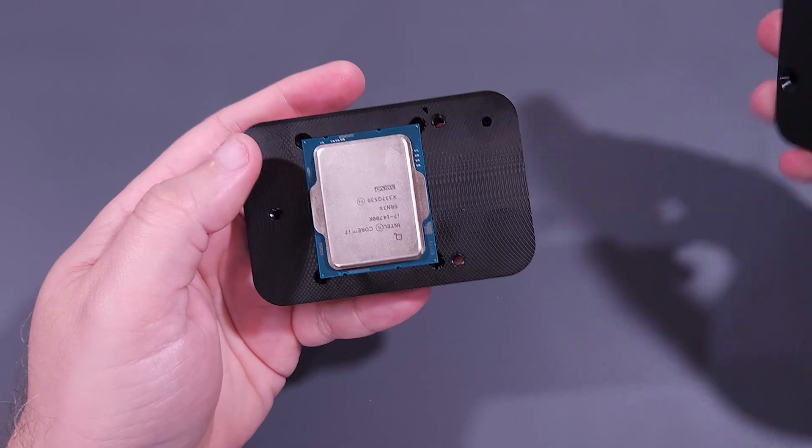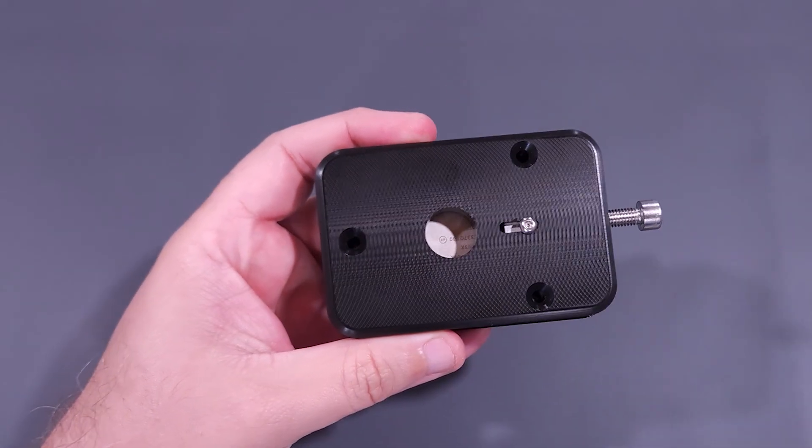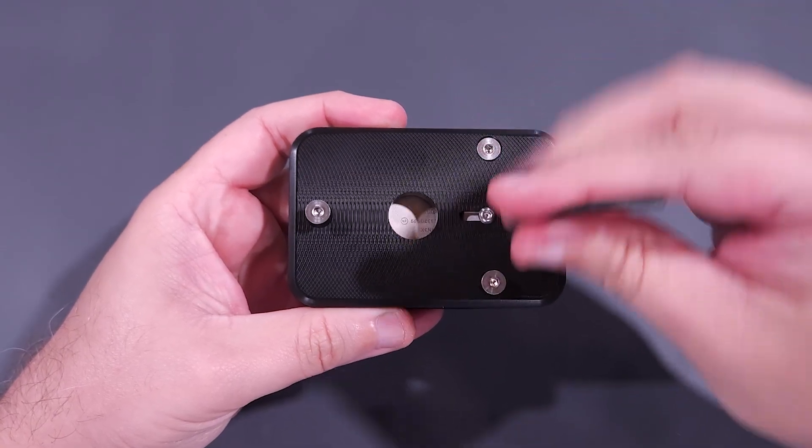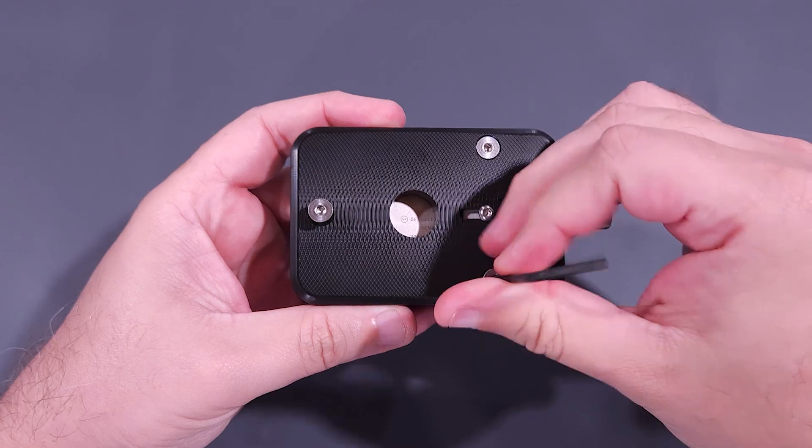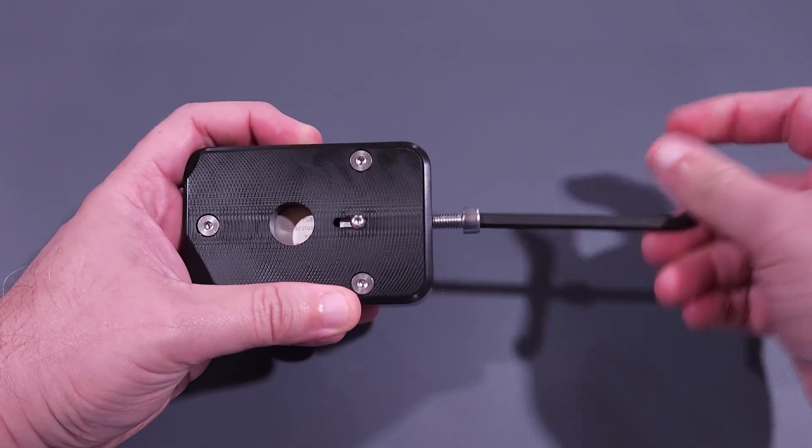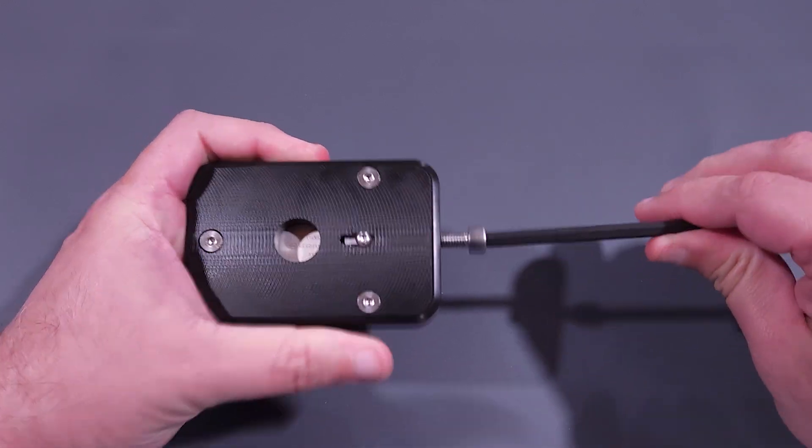Once the CPU is warmed, I'll quickly transfer it to the delid tool with the triangle on the CPU lined up to the triangle on the tool. Next, I'll insert the three flathead countersunk screws and tighten them down. With the screws in place, I'll take a larger hex key, insert it into the caphead screw on the side of the delid tool, and start to turn.